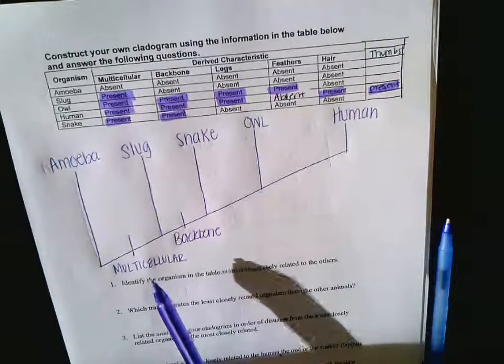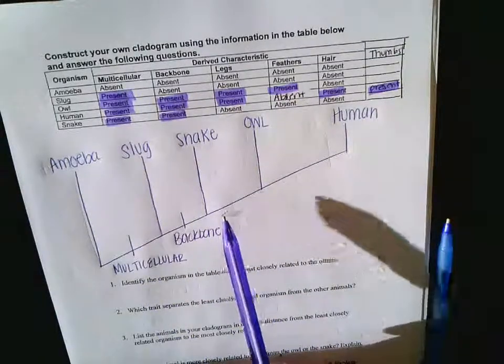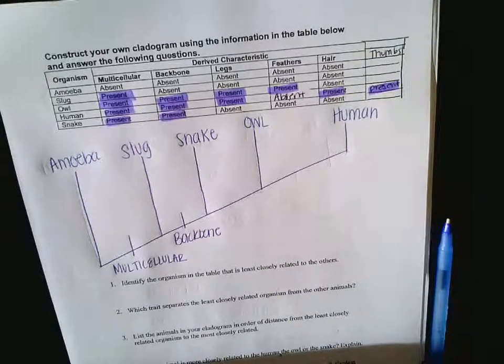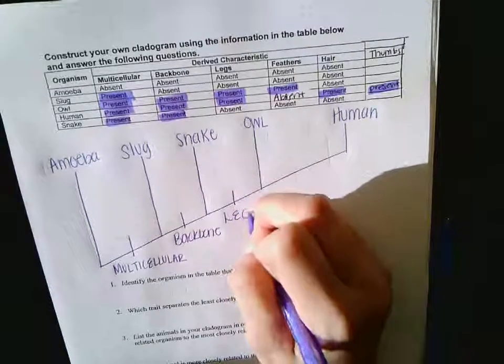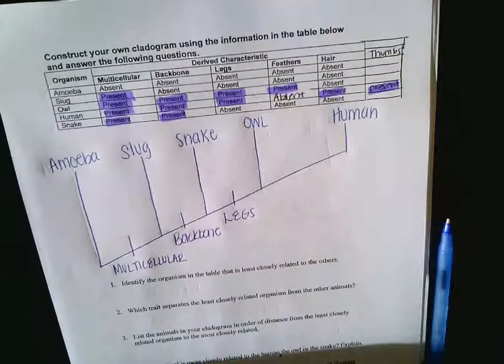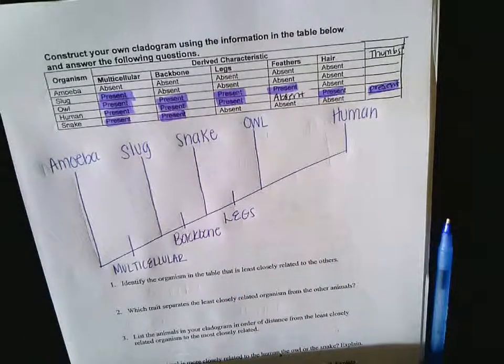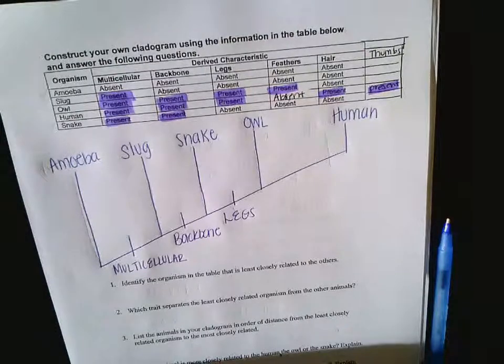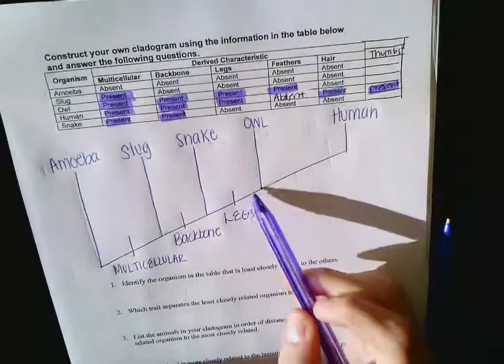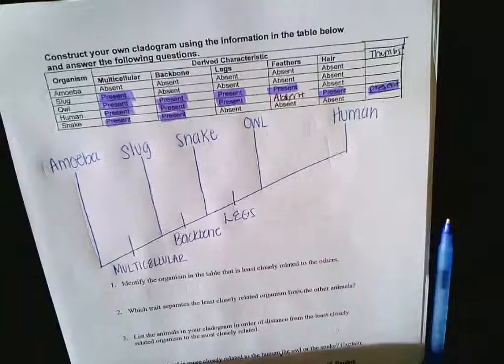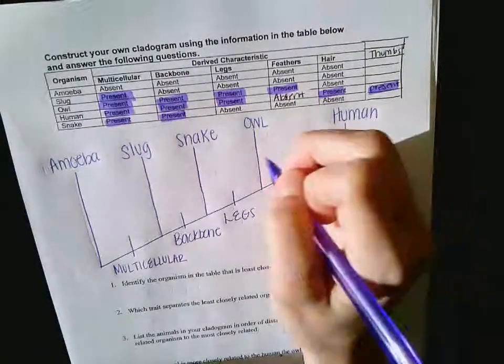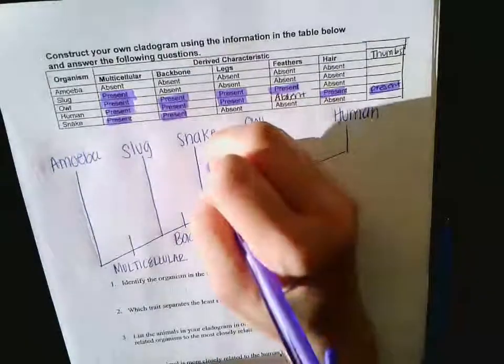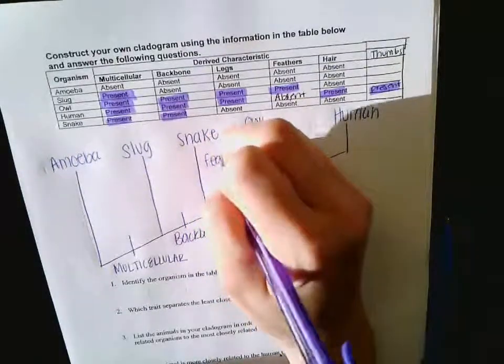Now what separates the snake from the owl? Legs. What also separates it? Feathers. Let's talk about that. Would it be appropriate for me to put feathers right here? Why not? Because humans don't have feathers. So what you're going to do instead is you're going to draw a line here and you're going to put feathers.